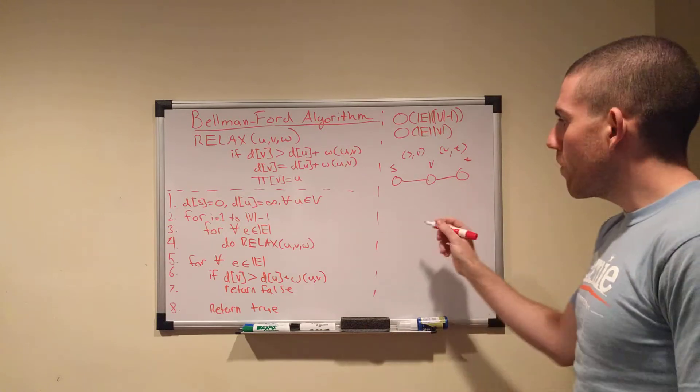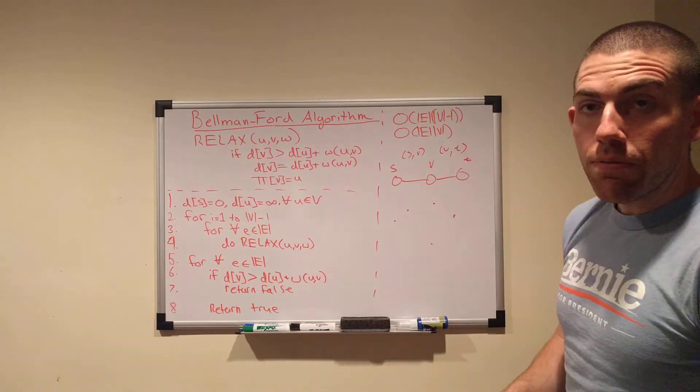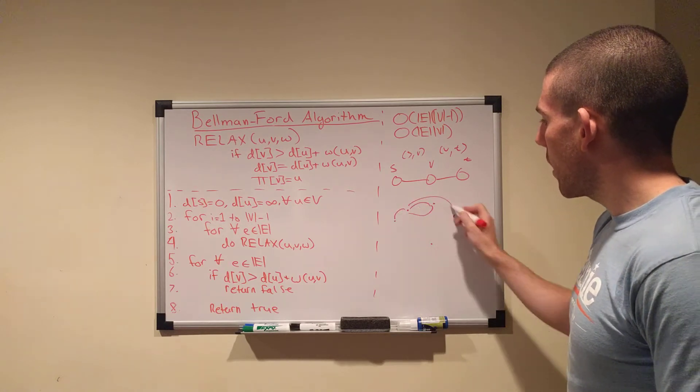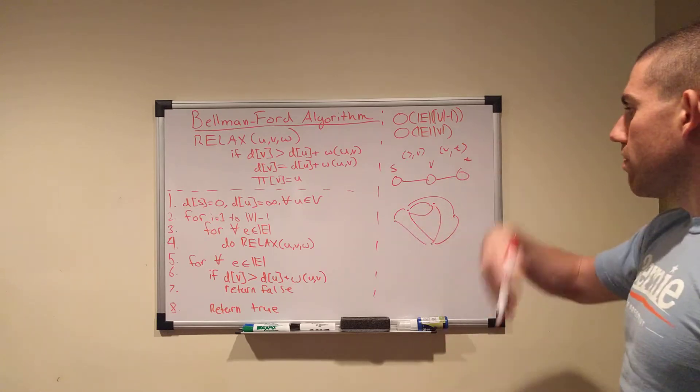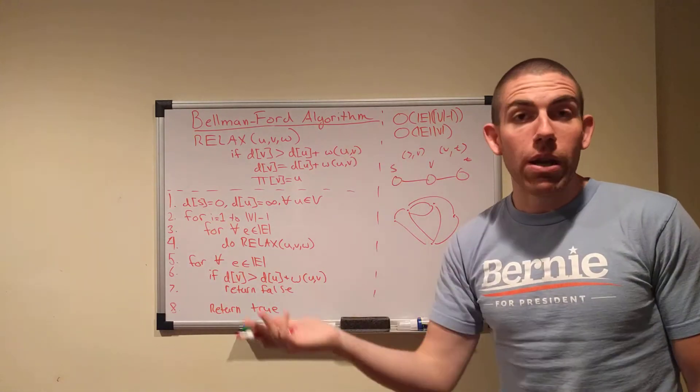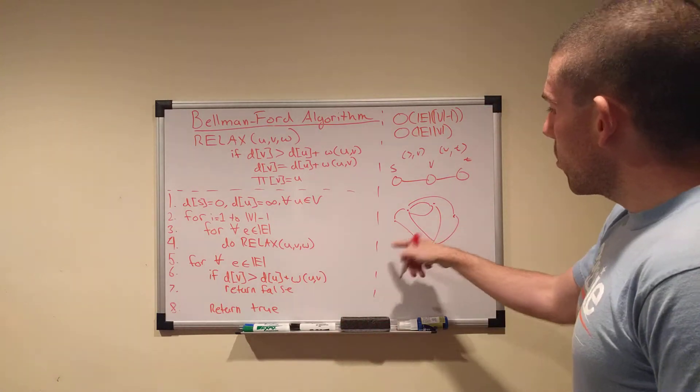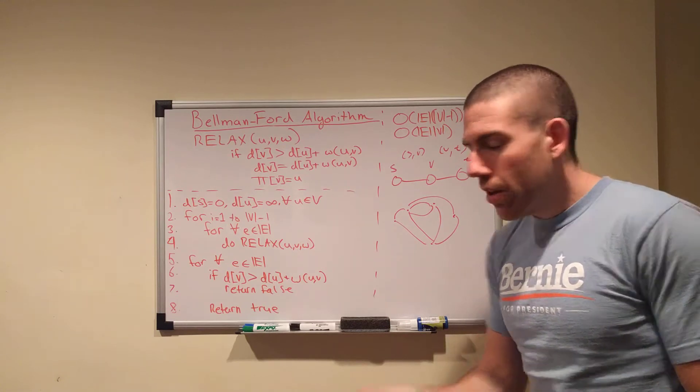But what if you've got a more complicated graph that has, like, five vertices that connect haphazardly, like this? Any number of edges you like, all the way up to V squared.